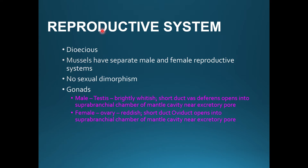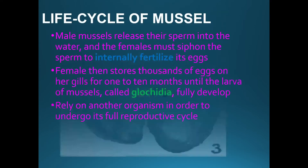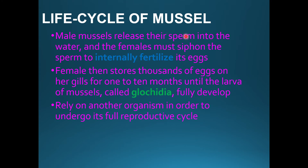Reproductive system: UNIO is dioecious — males and females are separate. In the life cycle, the male mussel releases its sperm into the water, and the female must siphon the sperm to internally fertilize its eggs. The female then stores thousands of fertilized eggs for one to ten months under the gills.